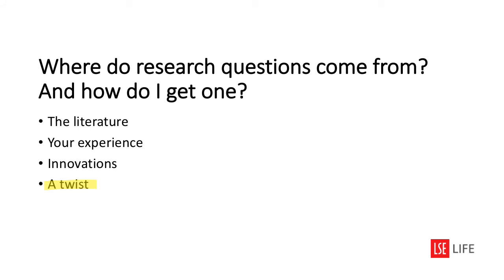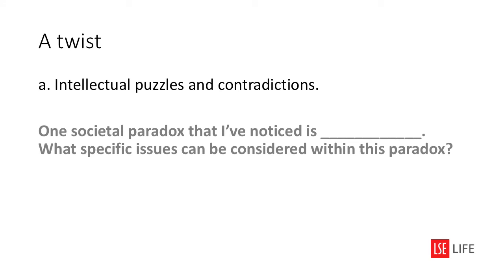Another area where ideas for research can spring up is unexpected twists in life — things that seem surprising or paradoxical. 'One societal paradox that I've noticed is ___ — what specific issues could be considered within this paradox?' There are many contradictions in life. For example, collective life is impossible without some rules, but sometimes breaking the rules can bring about interesting positive changes. Think about what a paradox illustrates, how it is dealt with in practice, and how larger groups or institutions experience or react to it.